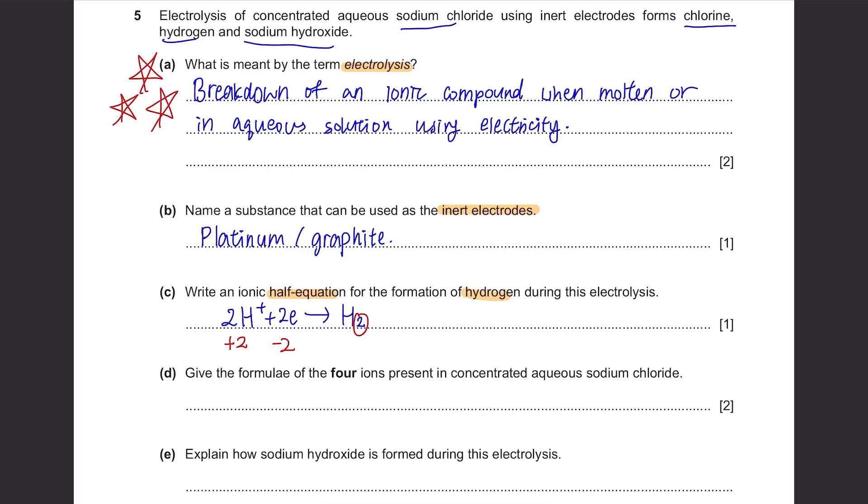Part D: Give the formulae of the four ions present in the concentrated aqueous sodium chloride. The two obvious ones are Na⁺ and Cl⁻. Now where are the other two? It's in aqueous. So if it's aqueous, it's in water, so H2O. And the two ions in water are H⁺ and OH⁻. So there you go, you have your four ions.